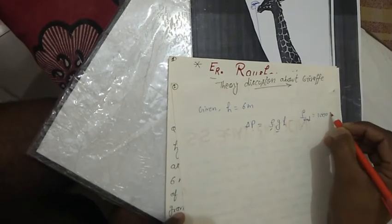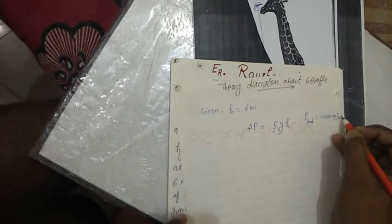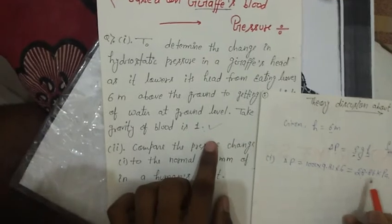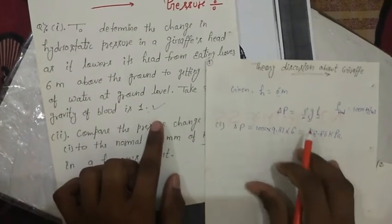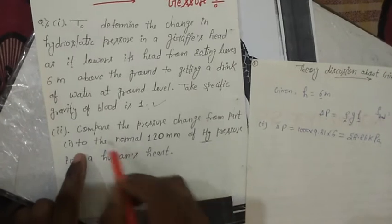For question one: ΔP = ρgh = 1000 × 9.81 × 6 = 58.86 kPa. So the answer to the first question is 58.86 kPa.